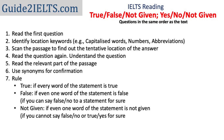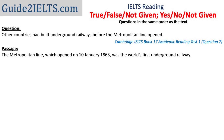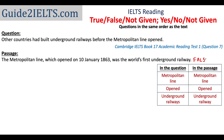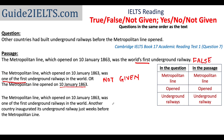Let's try to understand this rule using an example. The question says: 'Other countries had built underground railways before the metropolitan line opened.' The answer is false because the passage says the metropolitan line was the world's first underground railway, so no other country had built underground railways before. But if the passage mentions it was 'one of the first' underground railways, or just mentions its opening date, the answer would be not given, because we cannot confirm or contradict the statement.